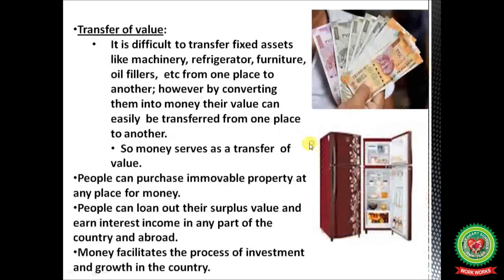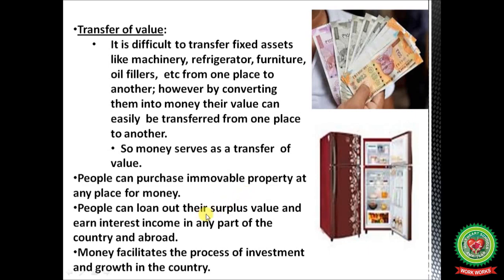Transfer of value: it is difficult to transfer fixed assets from one place to another, but it is easy to transfer money. By converting fixed assets like machinery, refrigerators, or furniture into money, their value can easily be transferred from one place to another. People can purchase immovable property anywhere with money, loan out or deposit surplus money in banks to earn interest, and earn interest income in any part of the country or abroad. Money facilitates the process of investment and growth in the economy.